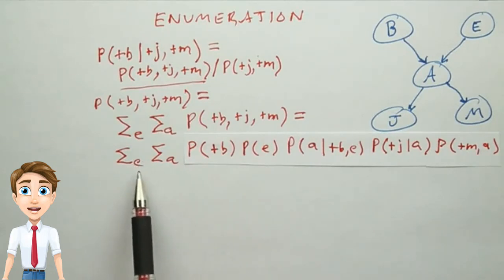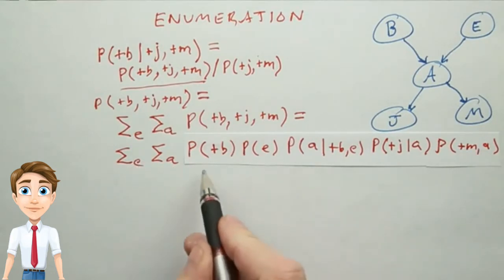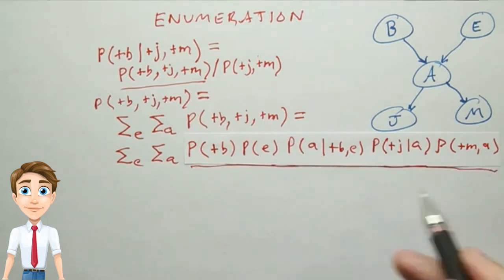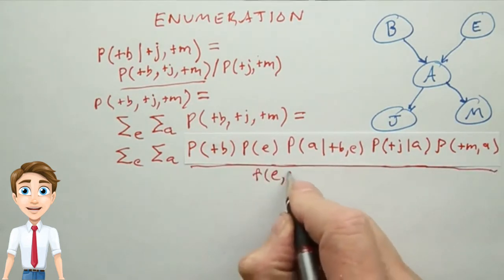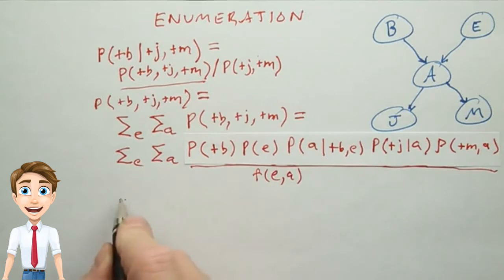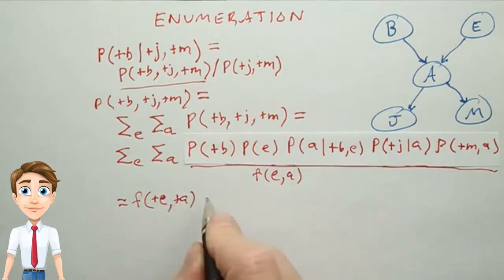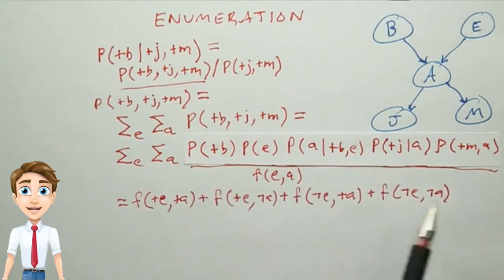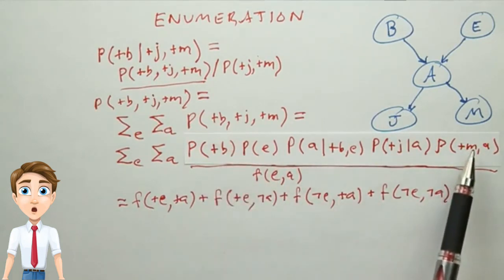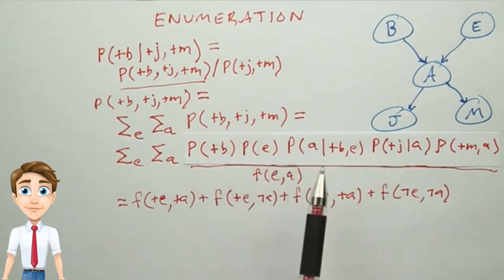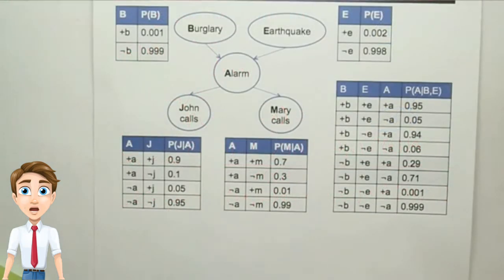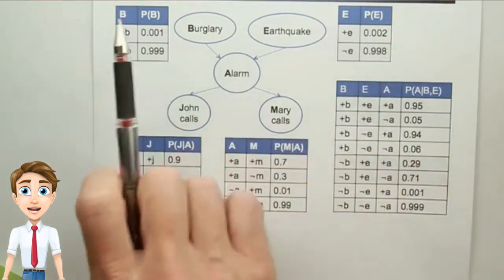Which we then have to sum over all values of E and A. If we call this product F of E and A, then the whole answer is the sum of F for all values of E and A. So the sum of four terms for each of the terms is a product of five numbers.